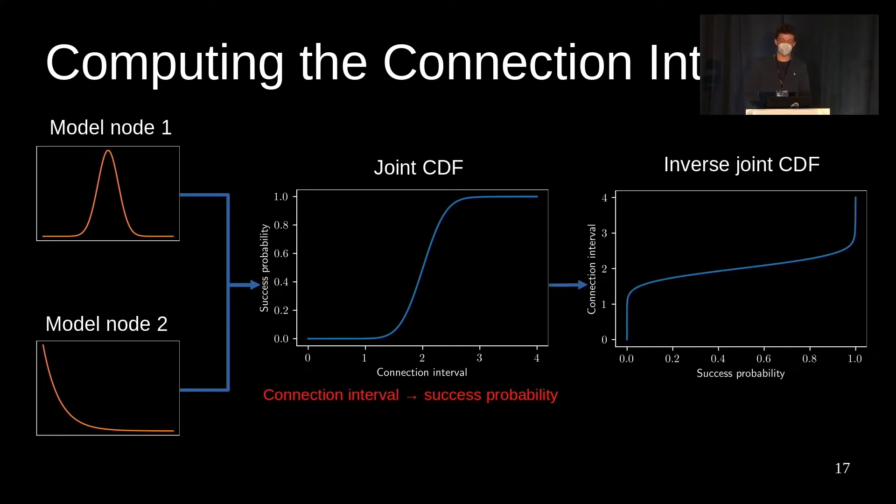If we invert the CDF and look at the inverse joint CDF, it tells us which connection interval we have to select in order for the probability of success to be any given value. For example, now we can just say we want a connection interval that guarantees that both nodes are sufficiently charged with 80% probability, and we can simply look it up in the inverse joint CDF and get the value for the connection interval that works with that probability.